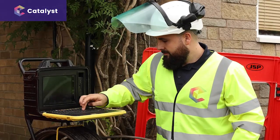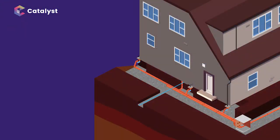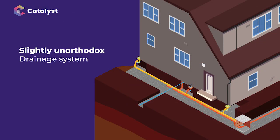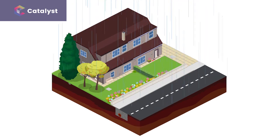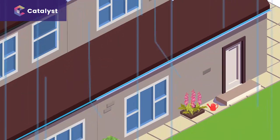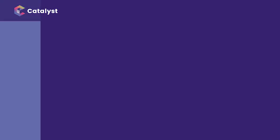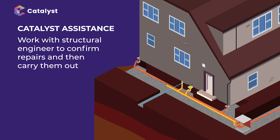You can see how important it is to carry out a thorough drainage investigation. The investigation highlighted the unexpected, with a slightly unorthodox drainage system setup. Without doubt the main culprit for the subsidence to this property is the shared rainwater gully and pipework on the front corner, which takes a large volume of water from not only the policyholder's roof but also the neighbours'. Catalyst would assist in discussing the issues found with the local water company to get the correct repairs carried out. Private repairs on other sections would, once confirmed by the structural engineer, be carried out by Catalyst.